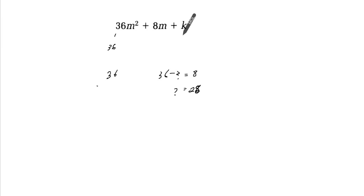So one possible value for K is minus 28. So if it was minus 28, then we can do that to get that 8 in the middle there.